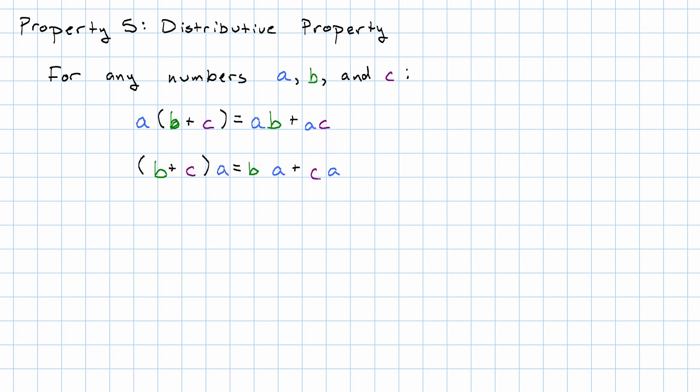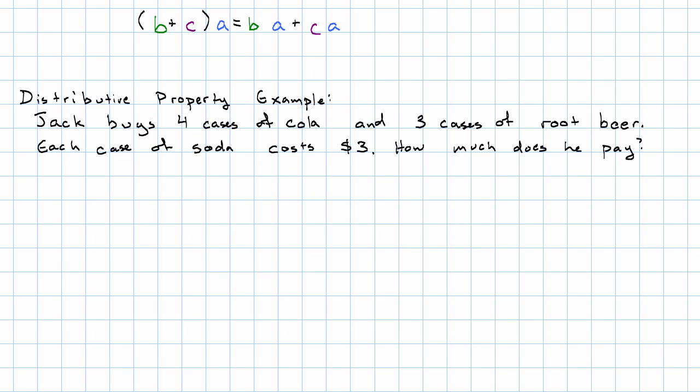I'm going to tell you a story where the distributive property applies. So, Jack buys four cases of cola and three cases of root beer. Each case of cola costs three dollars, and we want to work out how much he pays. There are two ways we could do it.